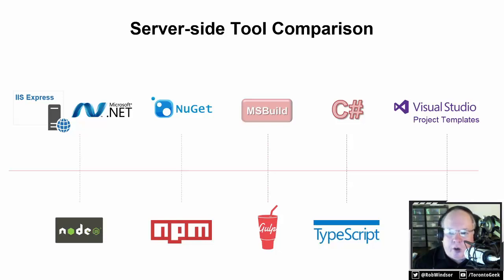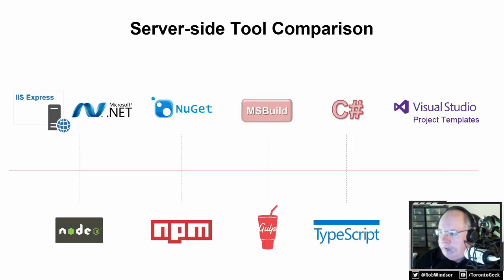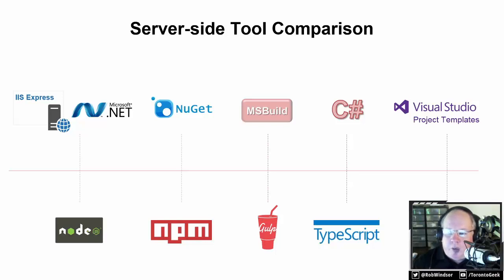Instead of using VB or C# as our development language, we're going to be using TypeScript. TypeScript is a language that should be familiar to C# developers because it has language elements like classes, interfaces, generics, and so on. And finally, we're going to be using Yeoman for project generation. Where in Visual Studio we would say File > New Project, we'll type 'yo' on the command line, give it a template name, answer some questions, and it'll generate a project for us.